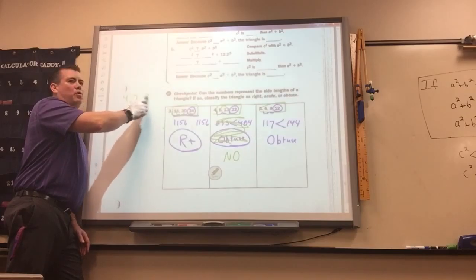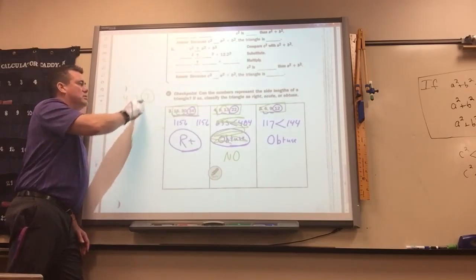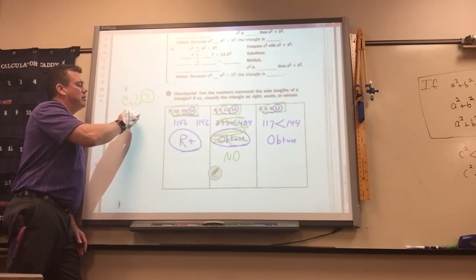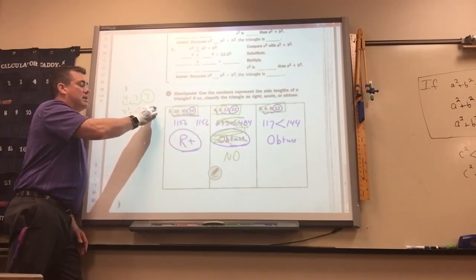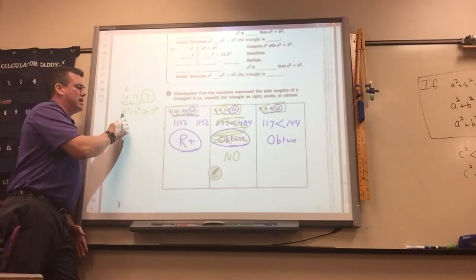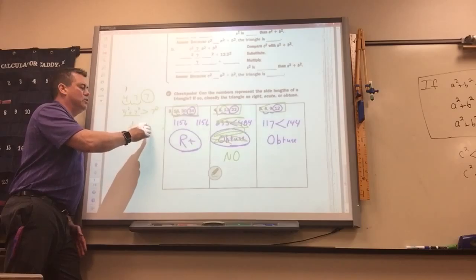It doesn't matter which one of these you choose as the hypotenuse. Obviously 4 squared plus 7 squared is going to be greater than 7 squared, right? Without using a calculator? So since this is greater, this would make it acute.